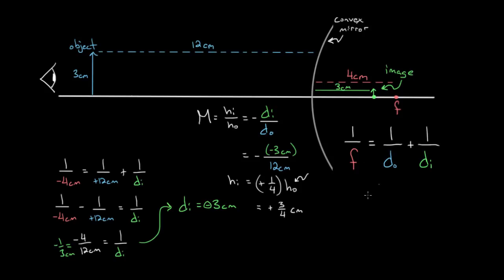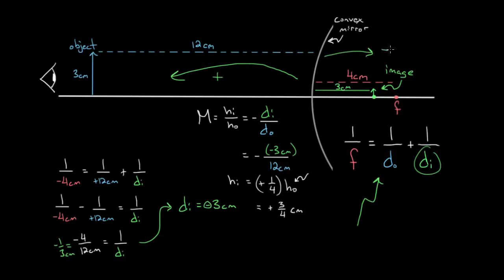To recap: you can use the mirror equation to figure out where images are located. The sign convention is that objects, images, and focal lengths in front of the mirror are positive, and anything behind the mirror is negative. You can use the magnification equation to figure out how tall the image is relative to the object by taking negative the image distance over the object distance.